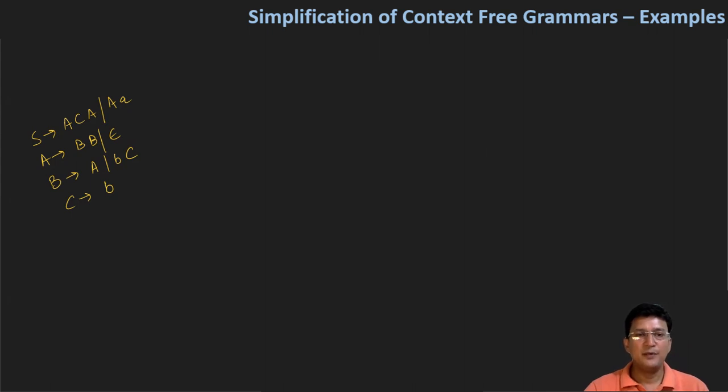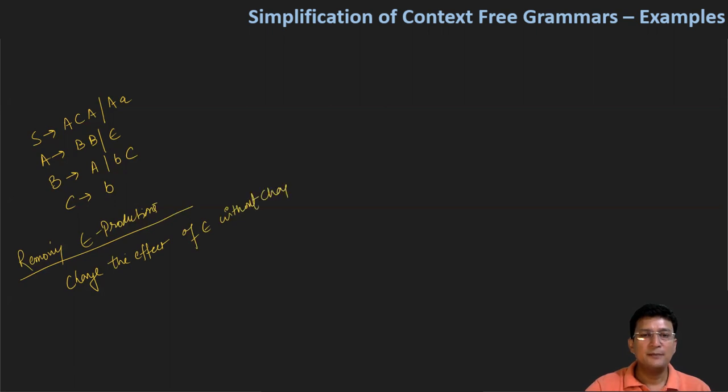Now let's look at a fourth method, in which we remove epsilon productions. So we are removing the epsilon productions. The method for removing epsilon productions is that the meaning of our productions should not change. We will remove the effect of epsilon without changing the meaning of the grammar.